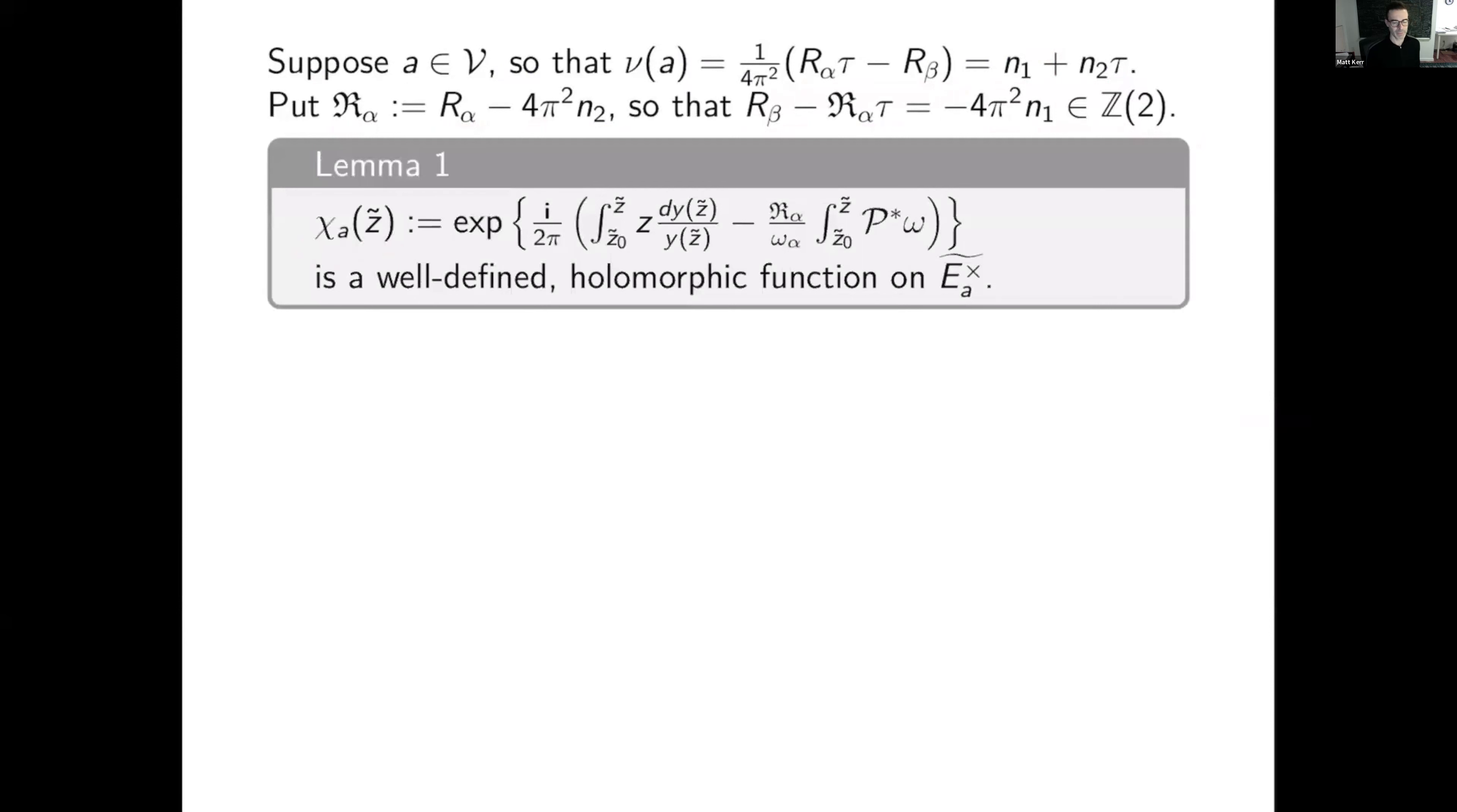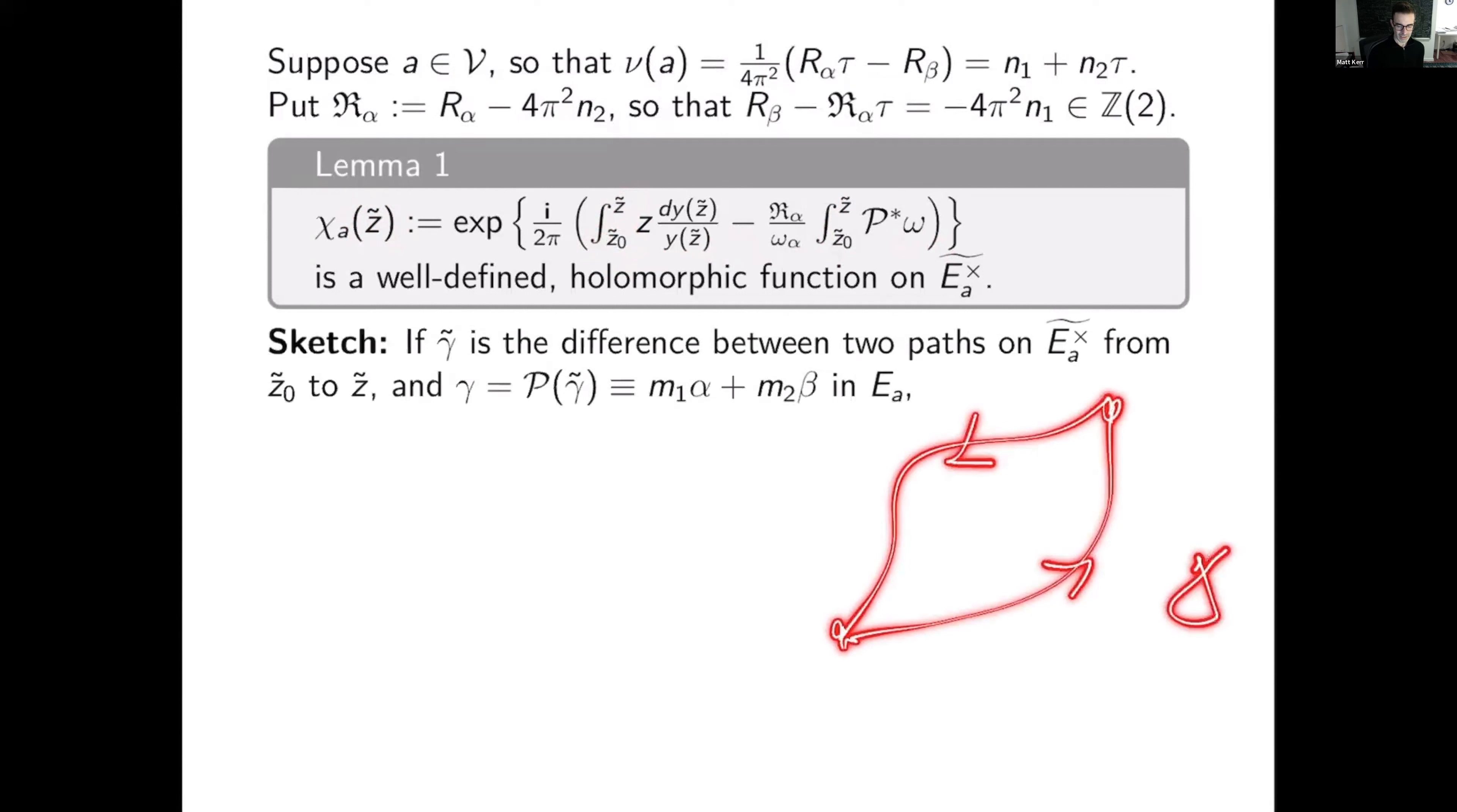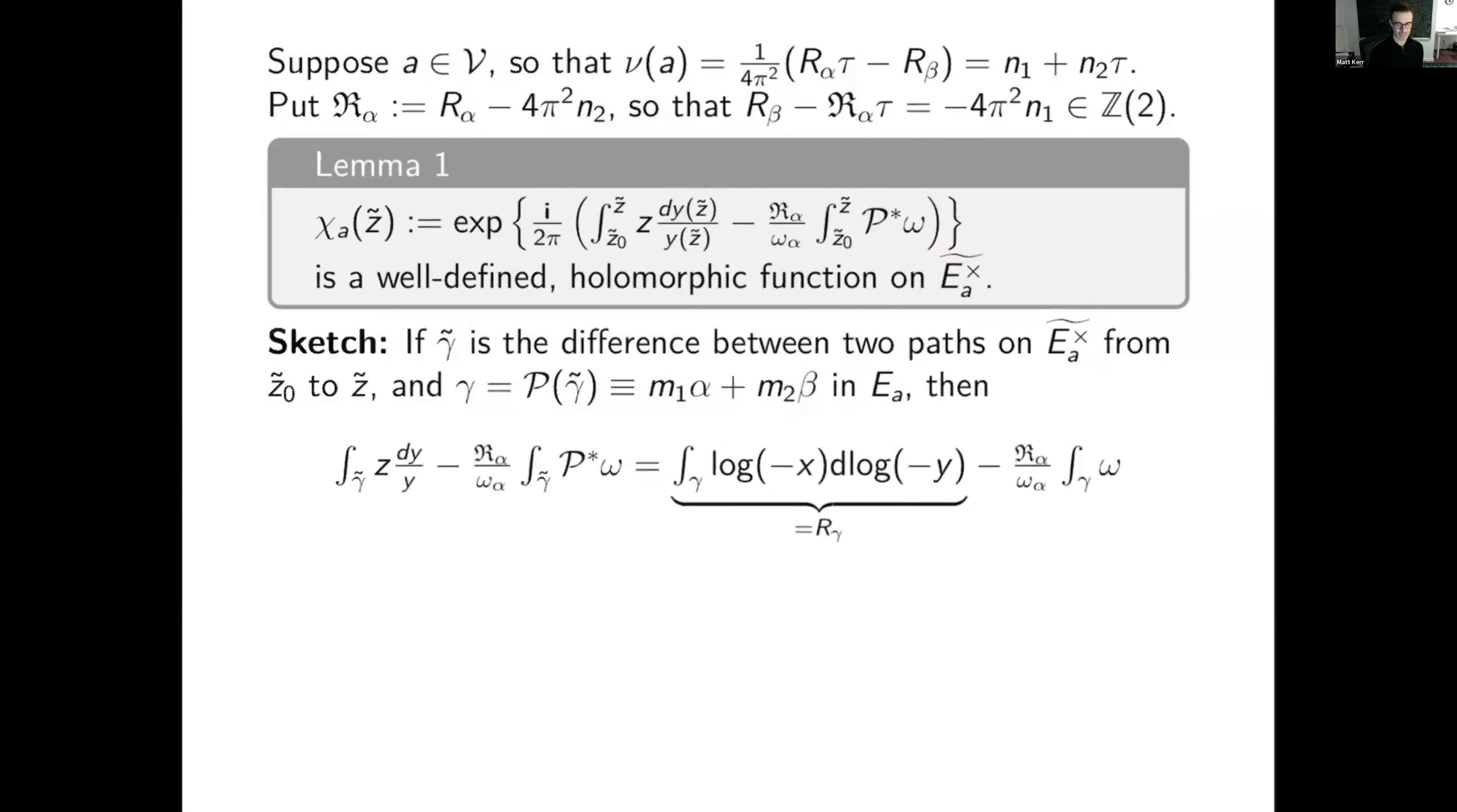So we have a regulator piece, the integral is from the base point to the point which I want to evaluate, minus a sort of Abel-Jacobi piece. So I'm integrating the holomorphic one form from z0 tilde to z tilde. And I claim that's a well-defined holomorphic function upstairs. So the well-definedness is the thing you have to check if there's a difference between two paths, like so. So that's my gamma tilde. And I project it down to E_A, and that gives me a nice one cycle that I can write as a combination of alpha and beta.